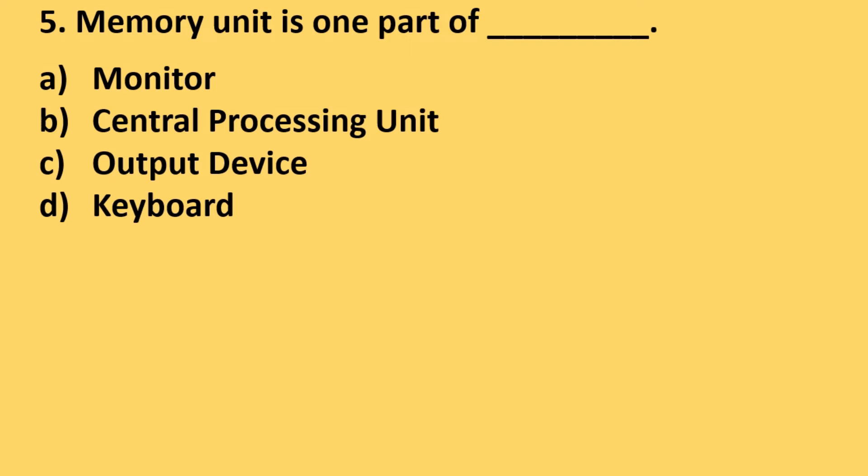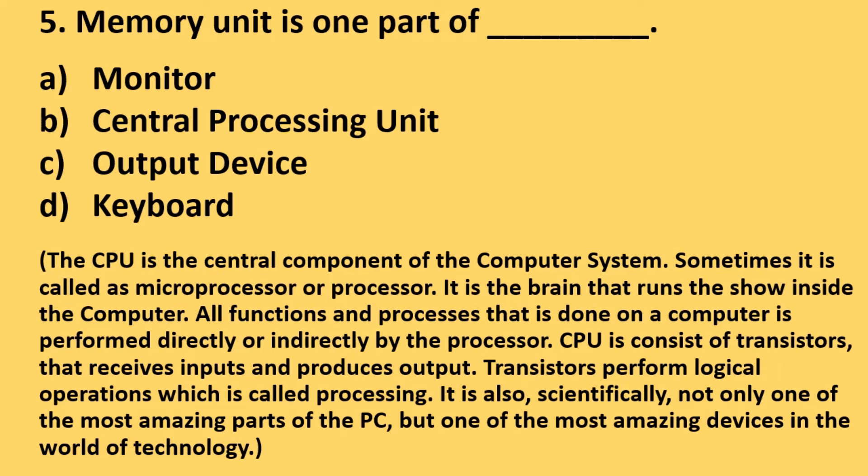Let's know more about the central processing unit. The CPU is the central component of the computer system, also called the brain or heart of the computer. Sometimes it's called a microprocessor or processor. It's the brain that runs the soul inside the computer. All functions and processes done on a computer are performed directly or indirectly by the processor. CPU consists of transistors that receive input and produce output. Transistors perform logical operations which is called processing.